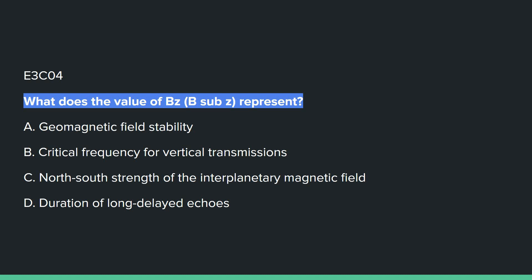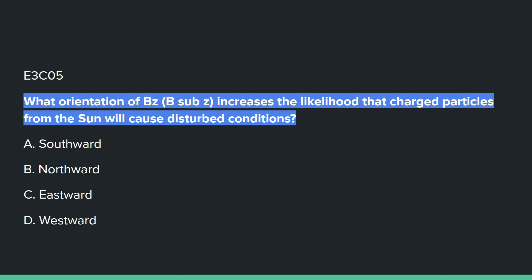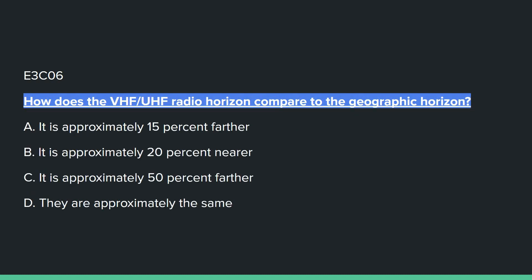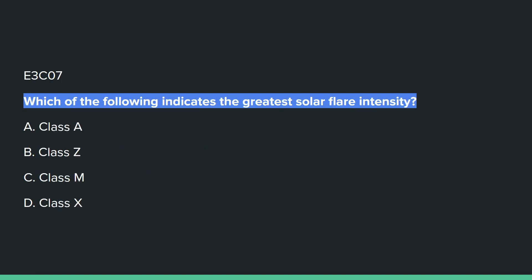E3C04: What does the value of BZ (B sub Z) represent? C: the north-south strength of the interplanetary magnetic field. E3C05: What orientation of B sub Z increases the likelihood that charged particles from the sun will cause disturbed conditions? A: southward. E3C06: How does the VHF/UHF radio horizon compare to the geographic horizon? A: it is approximately 15% farther.